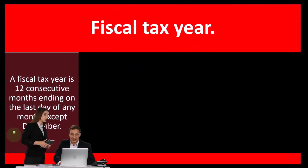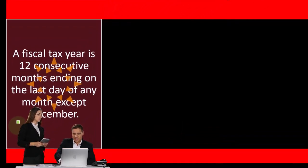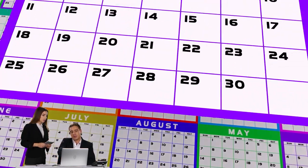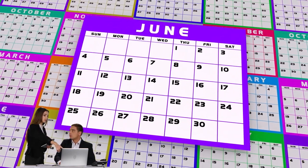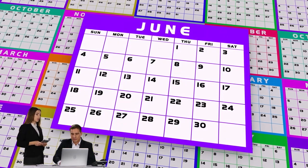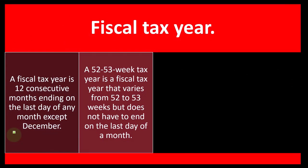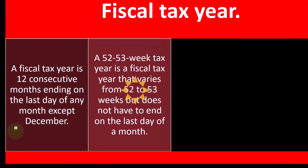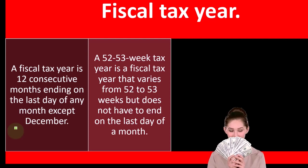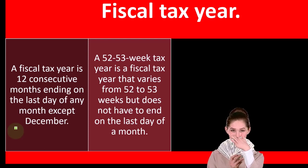Fiscal tax year — what is it? A fiscal tax year is 12 consecutive months ending on the last day of any month except December. We still have to have 12 months; you can't say your fiscal year is only three months — that's a quarter. It has to be 12 months, but it has an end period that's other than December. A 52 or 53 week tax year is a fiscal tax year that varies from 52 to 53 weeks but does not have to end on the last day of a month.